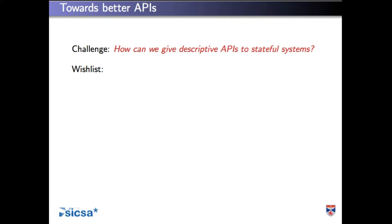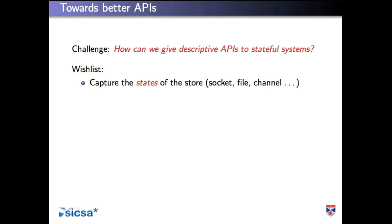I have a long wish list about what I want in this API. We certainly want to capture the state of the data store, the socket, the file, the communication channel — if you look at any program of realistic scale, you'll see state machines implicitly everywhere. We want to capture, at each point of the program, what state each of our resources is in, so that we can do operations that make sense at that point.